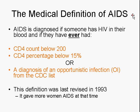This is the medical definition of AIDS. AIDS is diagnosed if someone first has HIV in their blood, and then if they've ever had one of the three following conditions: one, a CD4 count below 200; two, a CD4 percentage below 15%; or three, a diagnosis of an opportunistic infection, or OI, from the CDC list. You should know that this definition was last revised in 1993. At that time, it gave more women AIDS — it included opportunistic infections that men aren't likely to get but women are. Before 1993, a lot of women were having opportunistic infections but couldn't qualify for housing because they didn't technically have AIDS. They had invasive cervical cancer, which wasn't on the CDC list until this revision.